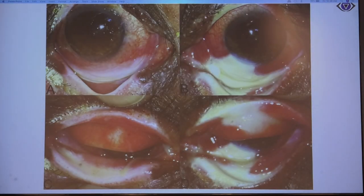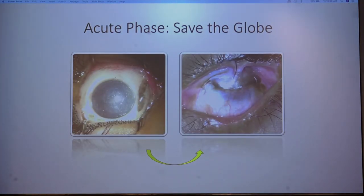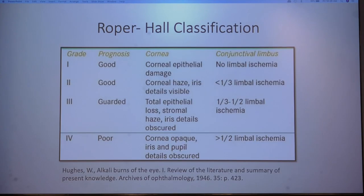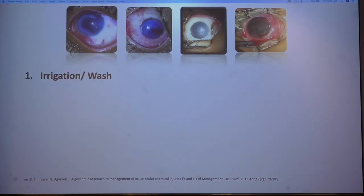These could be one-time insults or chronic installations in the form of unidentified eye drops prescribed by quacks, resulting in extreme injury to the ocular surface — including bilateral burns with limbal as well as tarsal ischemia and necrosis. Our management focuses on the acute phase to save the globe, decrease inflammation, and save the globe. Various prognostic classifications exist to help manage these cases.